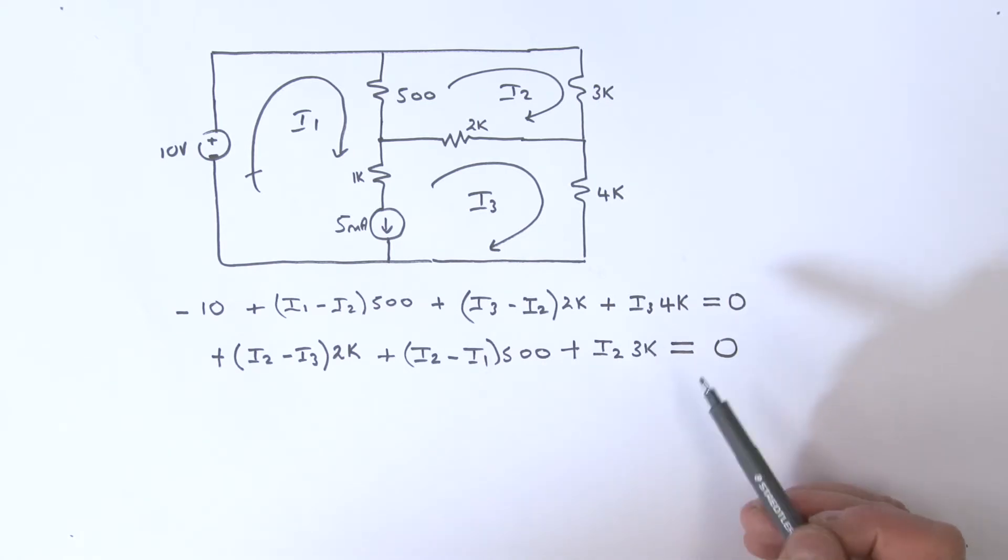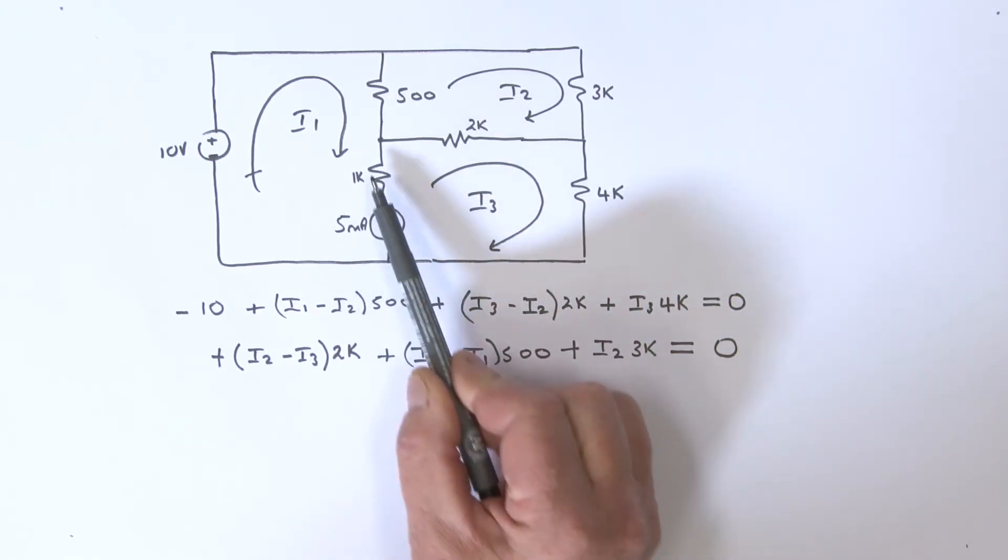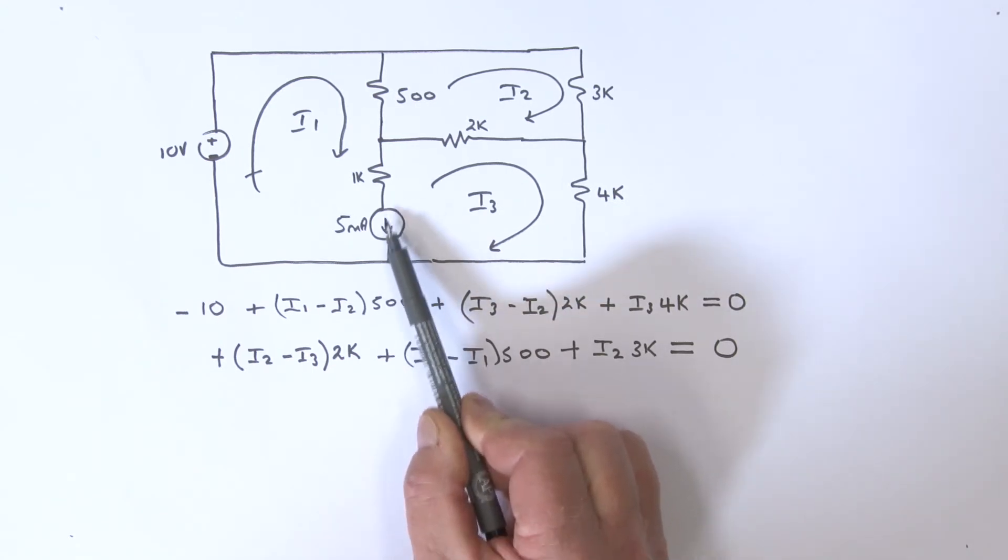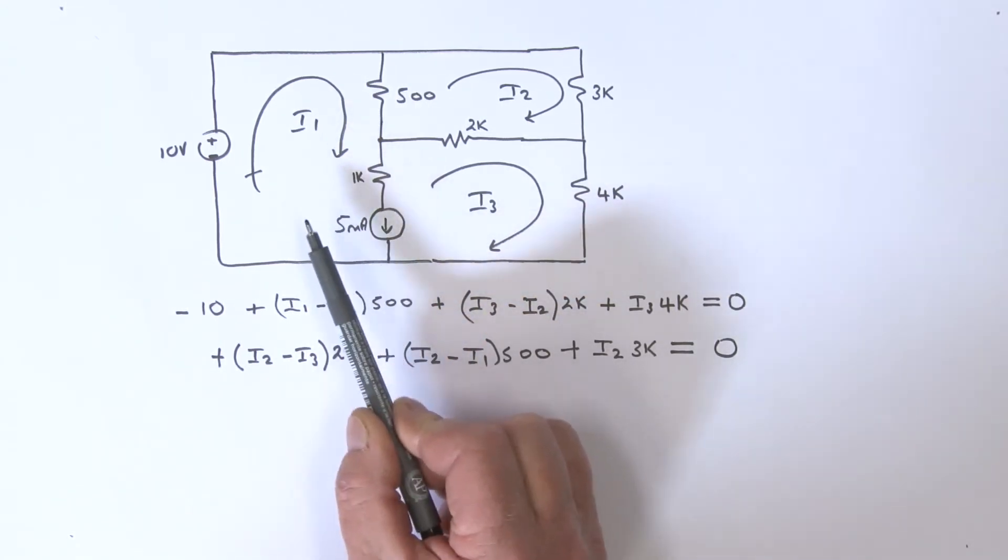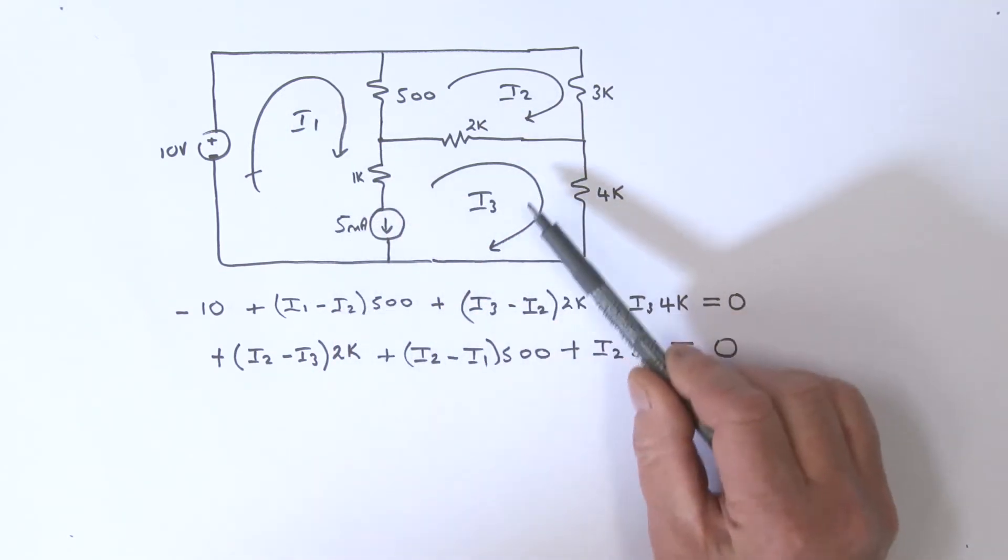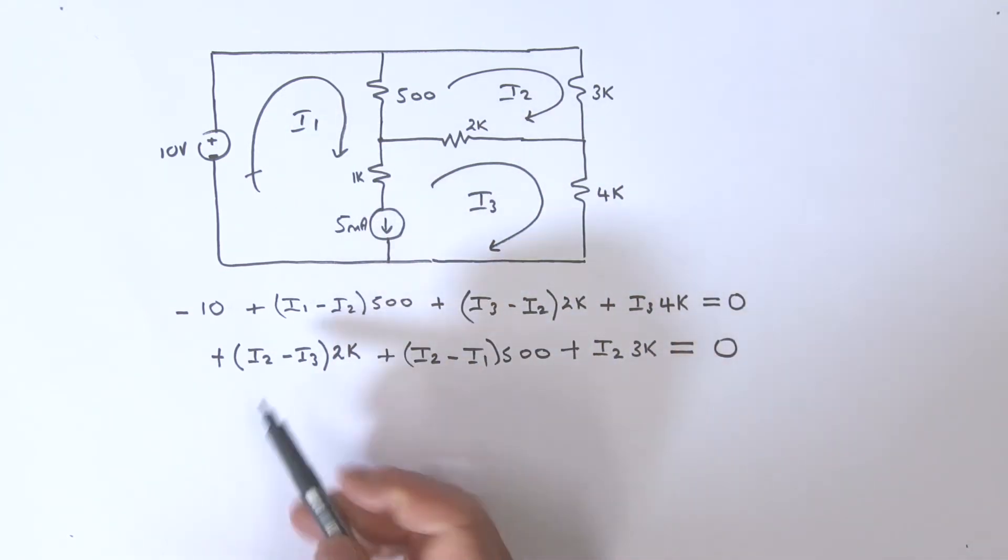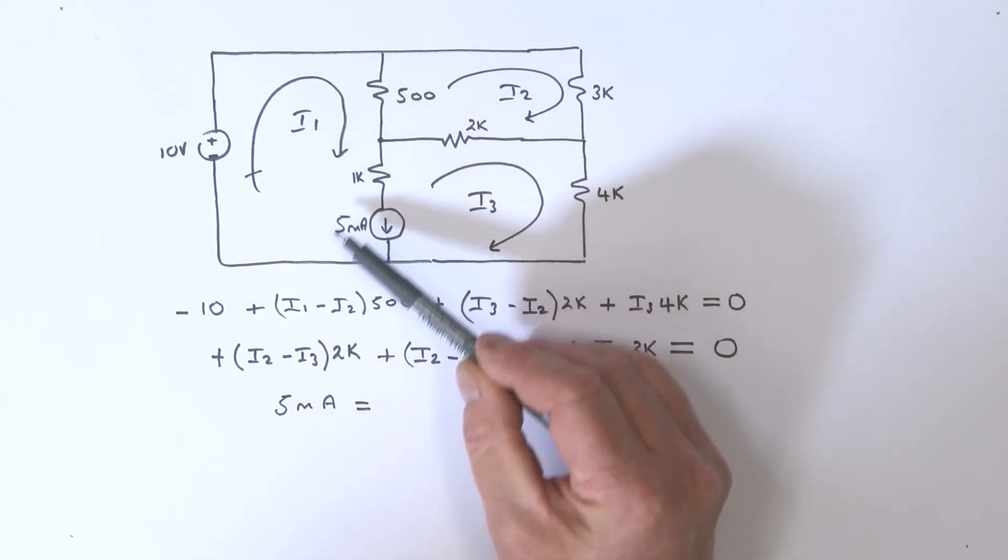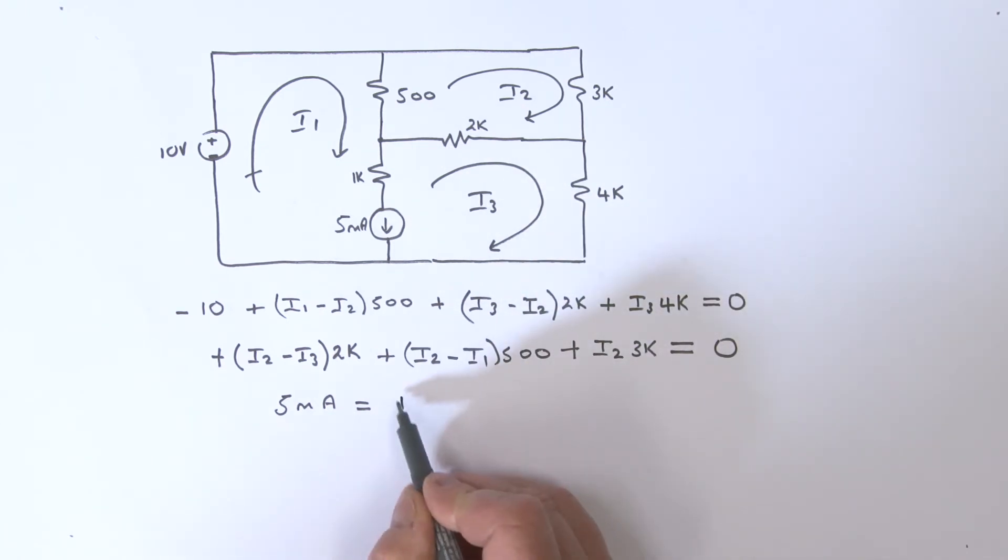Let's think about this just a little bit. We've got a current here - we know that current in terms of i1 and i3. We can say that 5 milliamps equals i1 minus i3. We now have enough information to solve this problem.